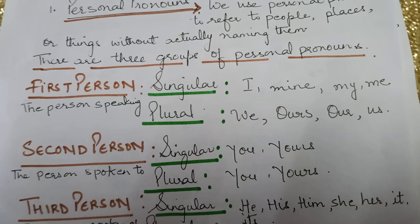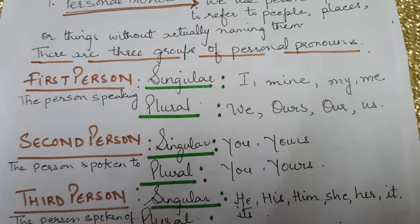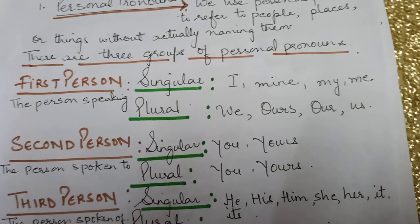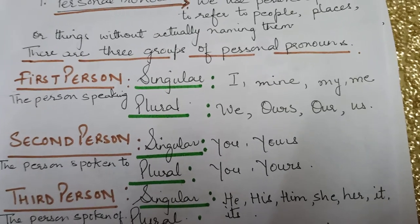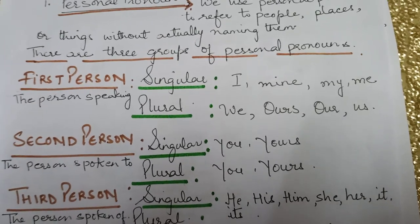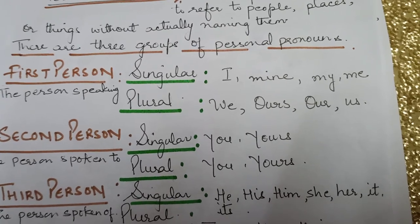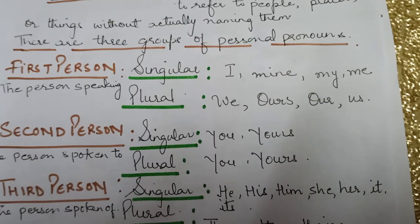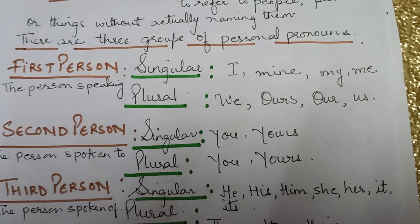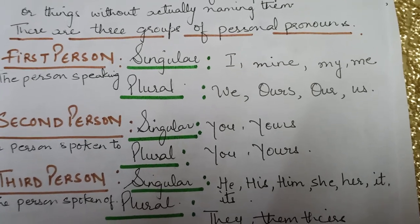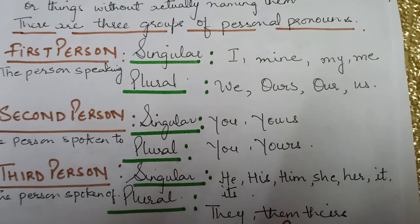First person — the person who is speaking. In the singular form, when the first person is speaking, we use I, mine, my, and me. In the plural form, we use we, ours, our, and us.